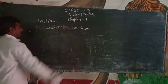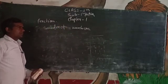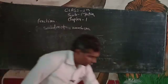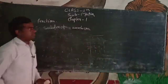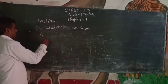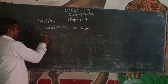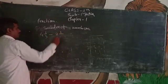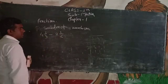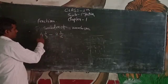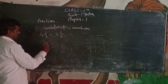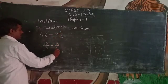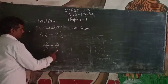Subtract of the fraction we can understand with example. 4 whole number 1 upon 3 minus 2 whole number 1 upon 6. We change into improper fraction. 3, 4 jatay hain 1, 13 upon 3 minus 6, 2 jatay hain 1, 13 upon 6. We find the LCM 3 and 6.